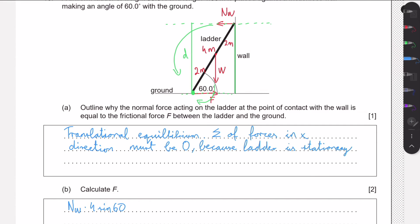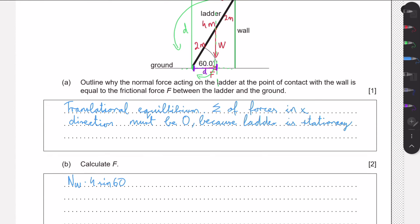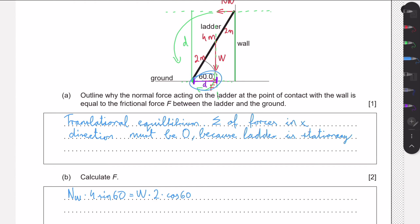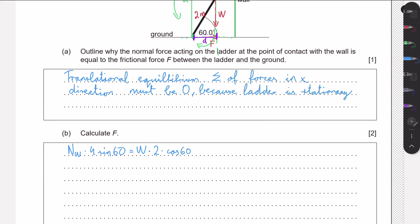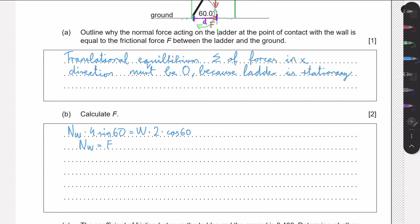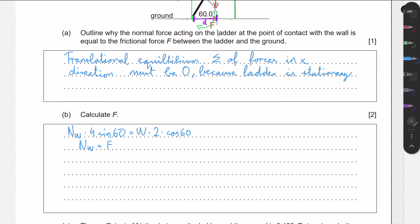Similarly, we find the moment arm for the weight force. The weight acts at the midpoint, which is 2 meters from the base. Using cosine, the perpendicular distance is 2 × cos 60°. So the torque from the weight is W × 2 cos 60°. Since the normal force equals the frictional force from part a, we can replace the normal force with the frictional force.